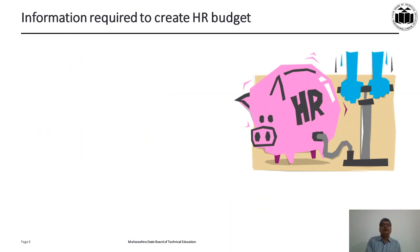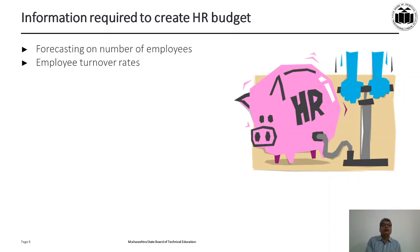Now what is the information required to create an HR budget? We will have to forecast the number of employees. We will have to understand the employee turnover rate — that means how many employees leave the organization in a given period, so accordingly you have to employ new people. This is called the attrition rate. Then, very importantly, the salary data, because you are paying salary to all the people and every employee's salary details must be with you.